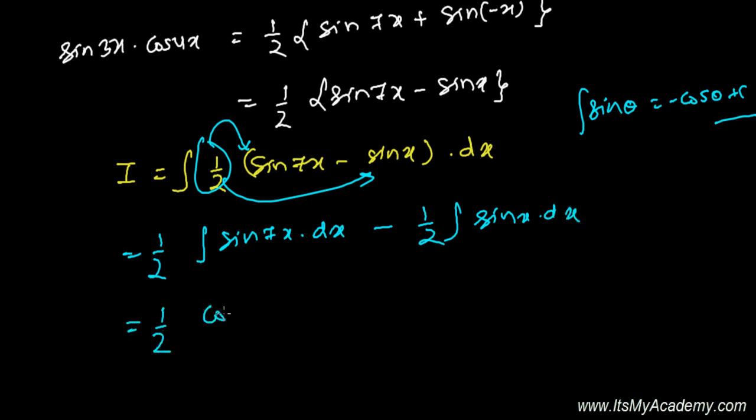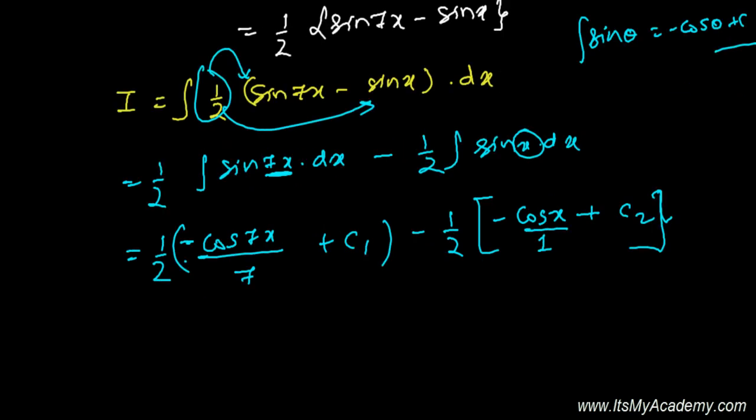So half integration of sine x dx. And that's one by two, and integration of sine 7x is negative cosine of 7x, and you know that you need to divide by the derivative of 7x, that's 7, and again plus some constant, let's say constant one. And again, minus half, derivative of sine x, that's minus cosine of x. And again you can divide by the derivative of this angle, that is one, so no need to divide.